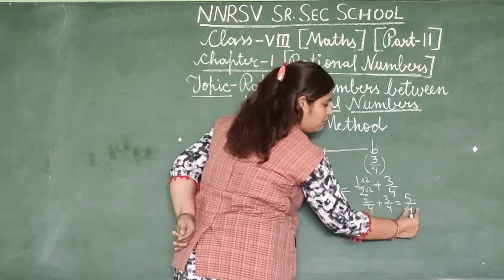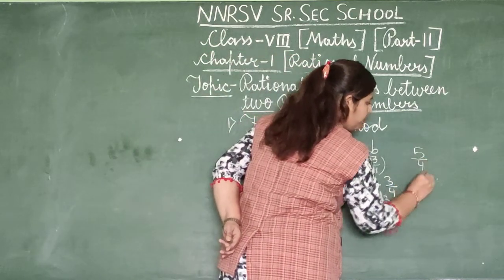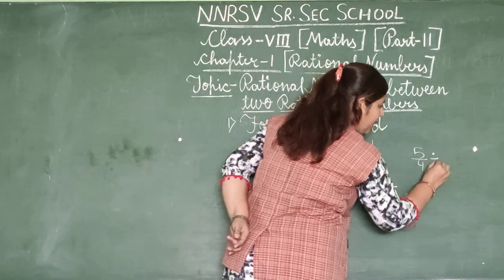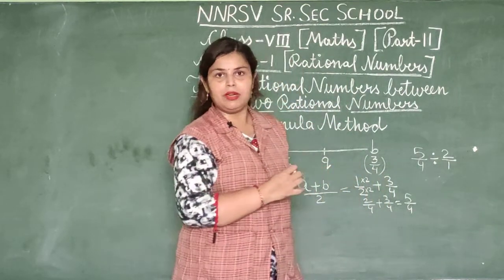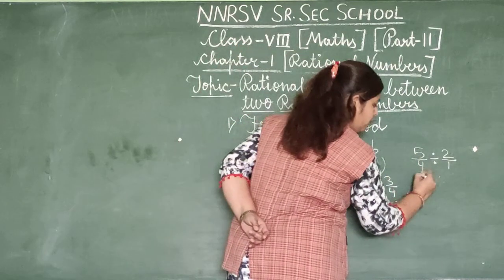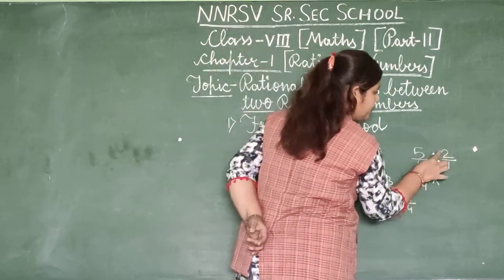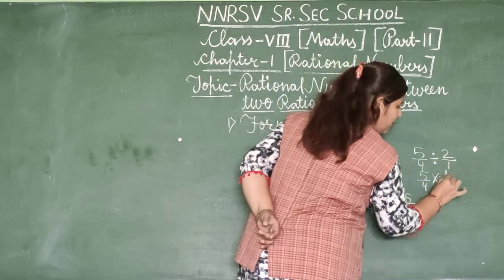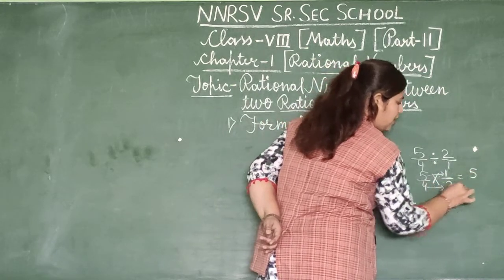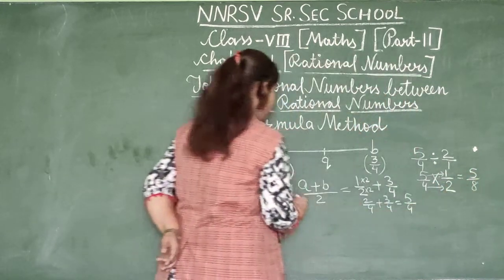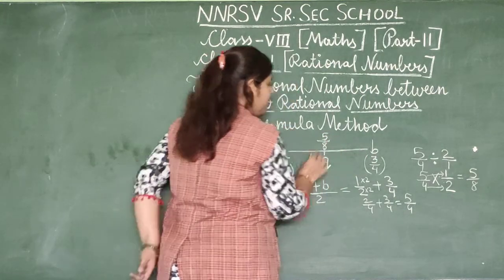Now A plus B equals 5/4. We divide by 2, so 5/4 divided by 2. Since 2 means 2/1, we change the division sign to multiplication and flip: 5/4 times 1/2. So 5 ones are 5 and 4 twos are 8. The rational number Q between A and B equals 5/8.